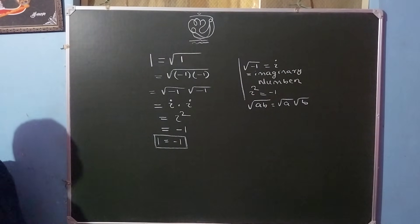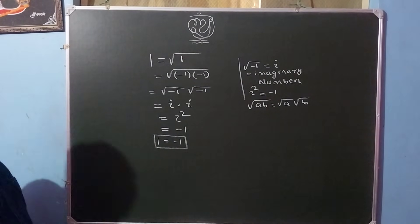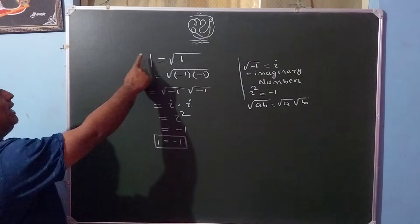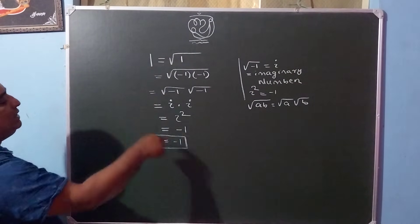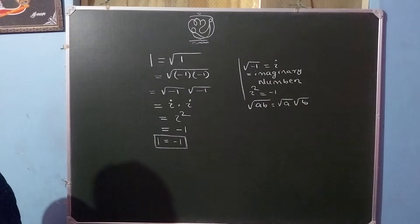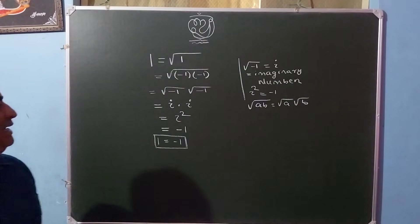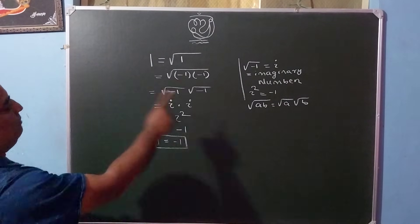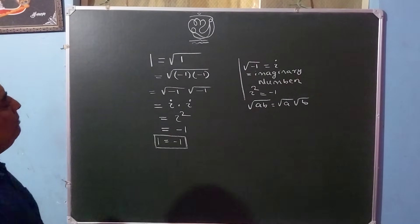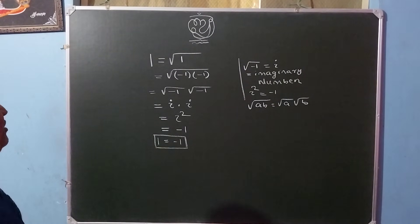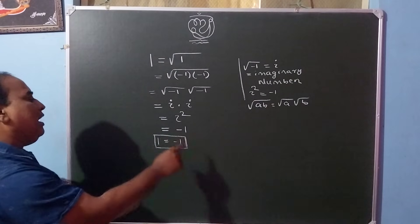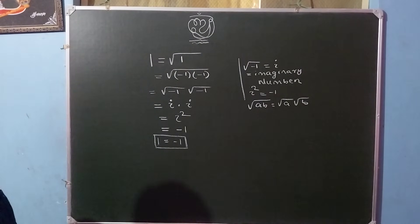In which step did I make a mistake so that I get 1 is equal to minus 1? Please convey it in the comment section — in which step I made the mistake to conclude that 1 is equal to minus 1.